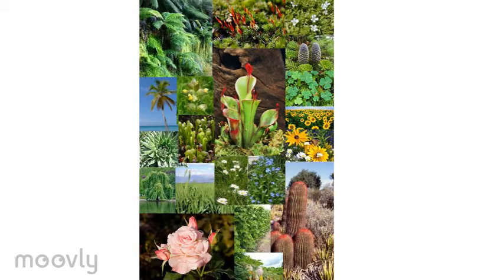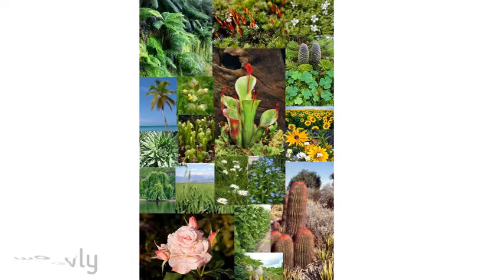Let's do a quick recap of everything that was discussed today. We have the roots, which anchor the plant into the ground and absorb water and nutrients from the ground. The stem supports the leaves and flowers of the plant, and transports water from the roots to the leaves.